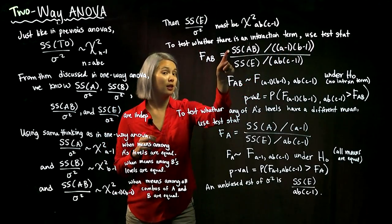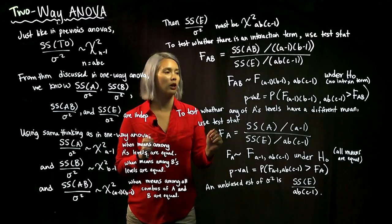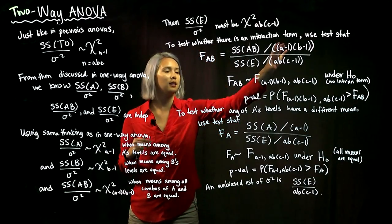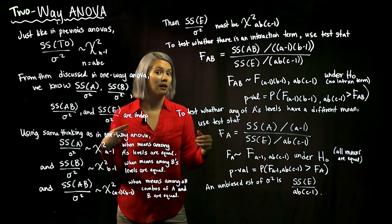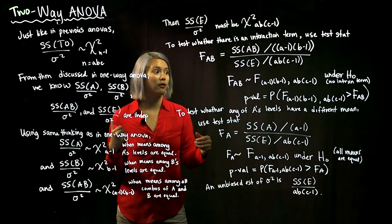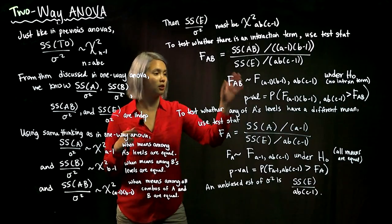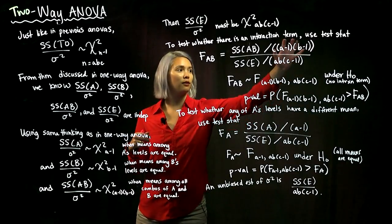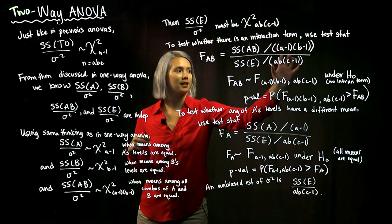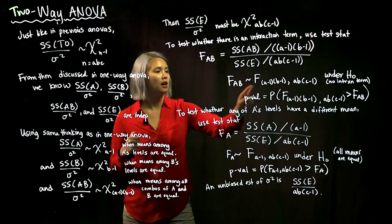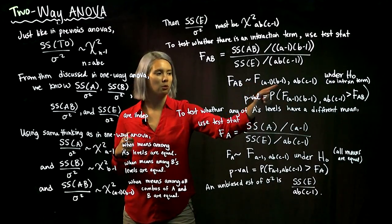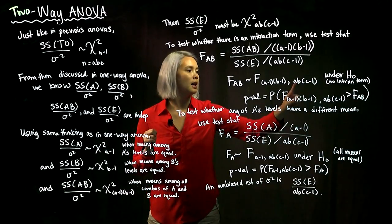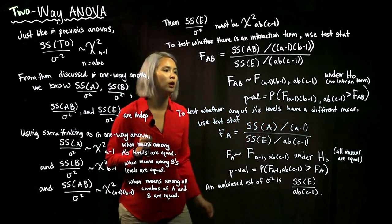The numerator is a chi-squared, the denominator is a chi-squared, and they are independent. Therefore this test statistic must be an F random variable. Its degrees of freedom are (a minus 1)(b minus 1) for the first degrees of freedom, and ab(c minus 1) for the second degrees of freedom.